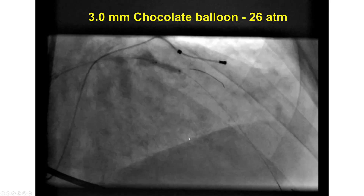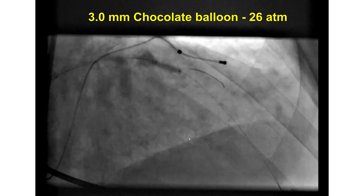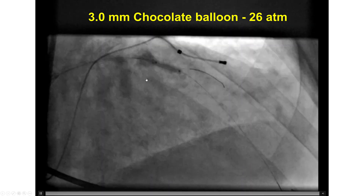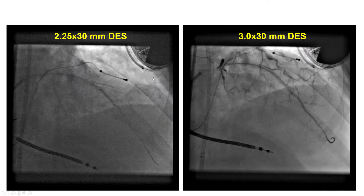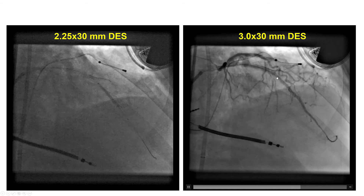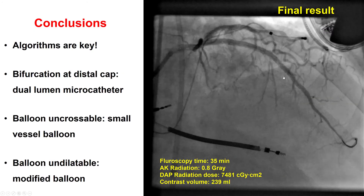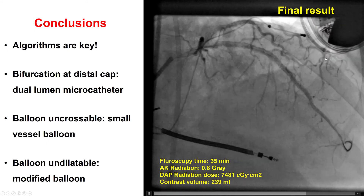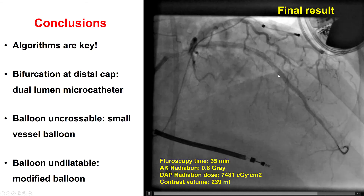In this particular case, we used a 3.0 mm Chocolate balloon, which has a nitinol cage allowing the pillows of the balloon to contact the vessel wall. This did allow expansion of the lesion. Two stents were successfully placed, jailing a wire in the diagonal which was a large-caliber vessel, and that provided a nice result. We had good flow in the LAD, did not lose the diagonal branch, and the patient had an uneventful recovery with resolution of his symptoms.